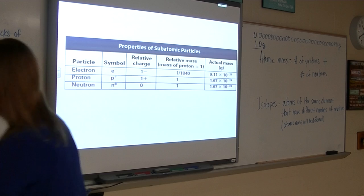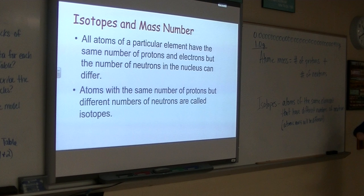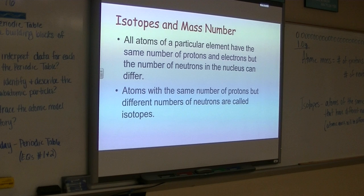All right, so I do want you to write these things down. This is going back into our isotopes. You don't have to copy this down if you want to because you already wrote it on your bell ringer. But all atoms of a particular element that have the same number of protons and electrons but a different number of neutrons are called isotopes, right? So they're going to have a different atomic mass.